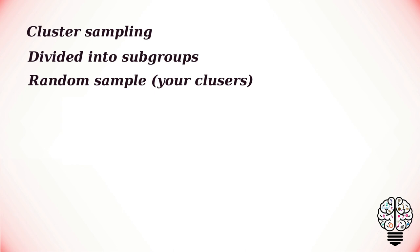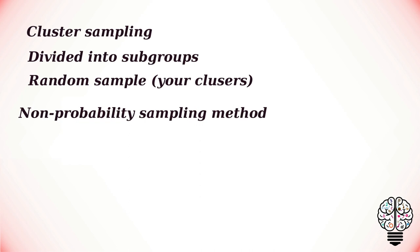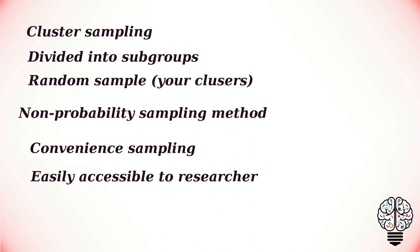In a non-probability sample, individuals are selected based on non-random criteria and not every individual has a chance of being included. This type of sample is easier and cheaper to access, but you can't use it to make valid statistical inferences about the whole population. Non-probability sampling techniques are often appropriate for exploratory and qualitative research, where the aim is not to test a hypothesis about a broad population but to develop an initial understanding of a small or under-researched population.